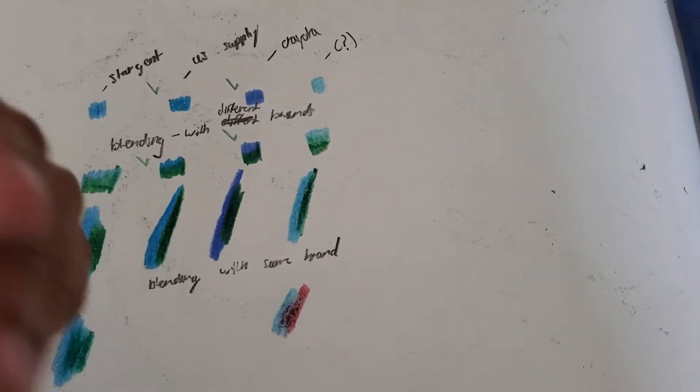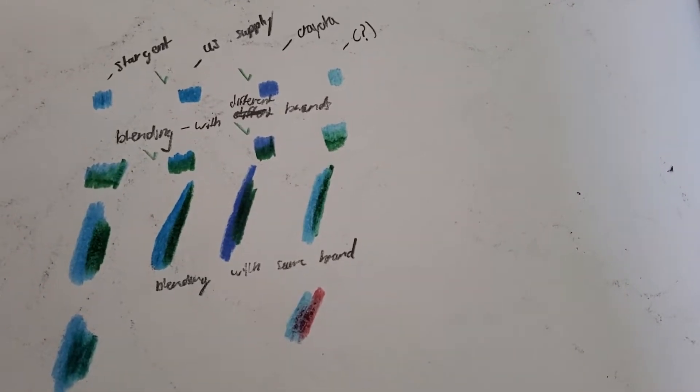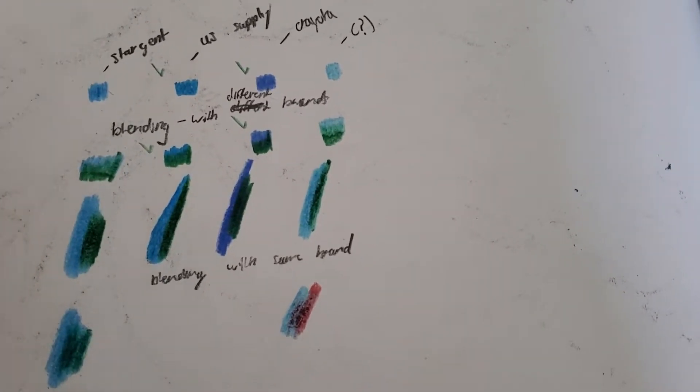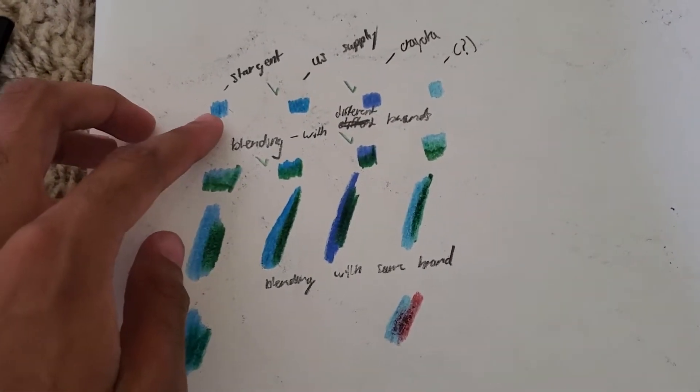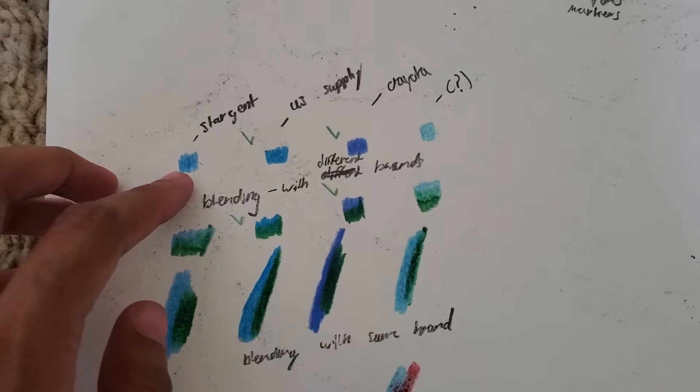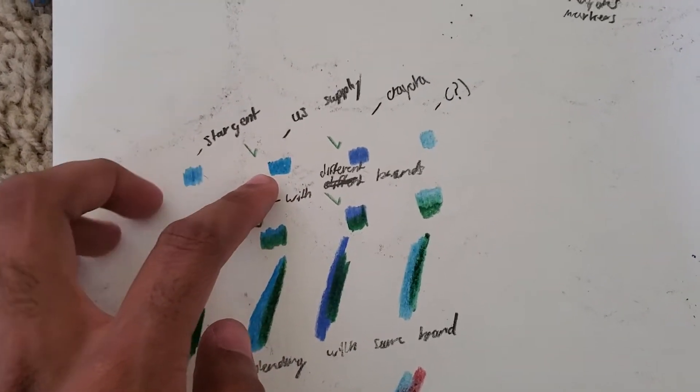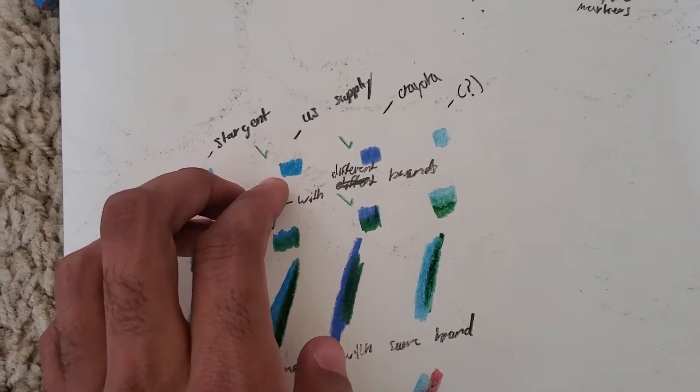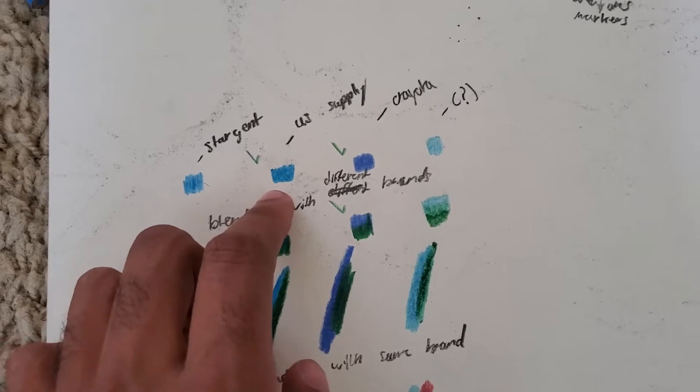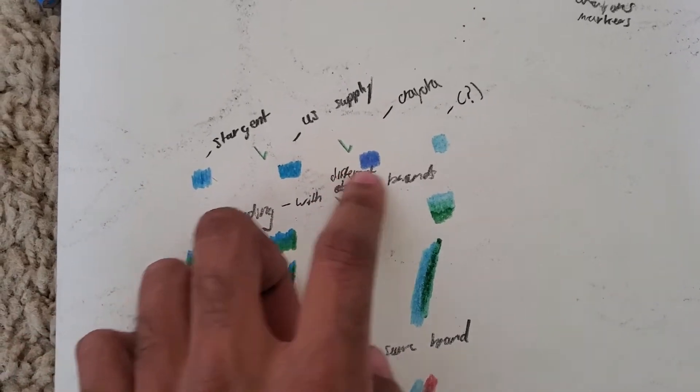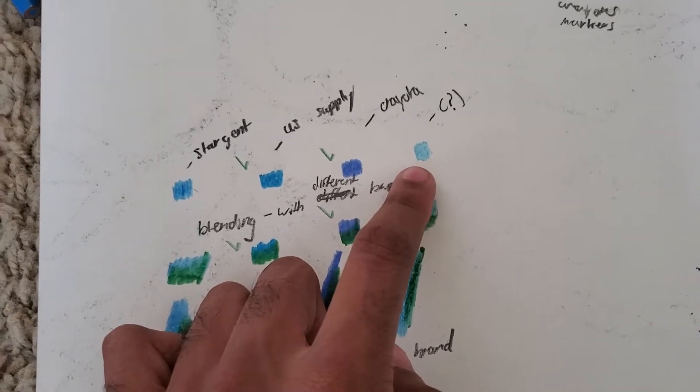Hello everybody, my name is Lawrence Walker. Here today I want to compare and contrast certain colored pencil brands. Stargate light blue is right here, US supply RS pencils is right here which is probably a sky blue, Crayola sky blue is right here, and this is another brand I had but I don't know the name of.